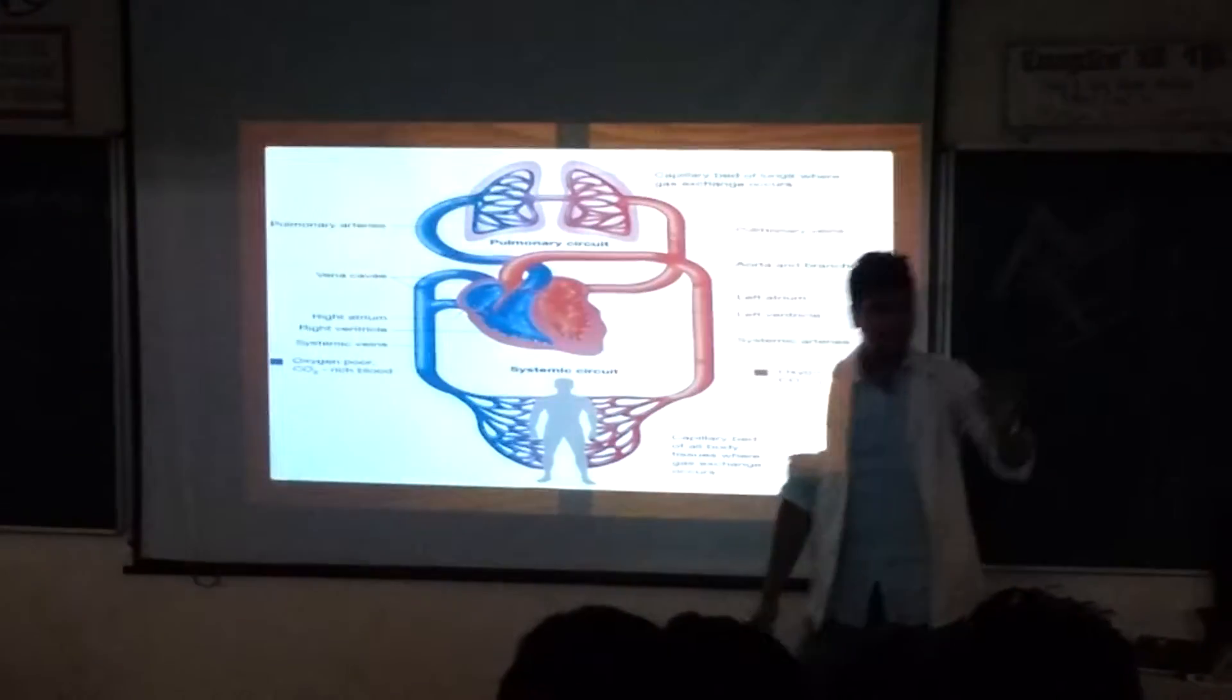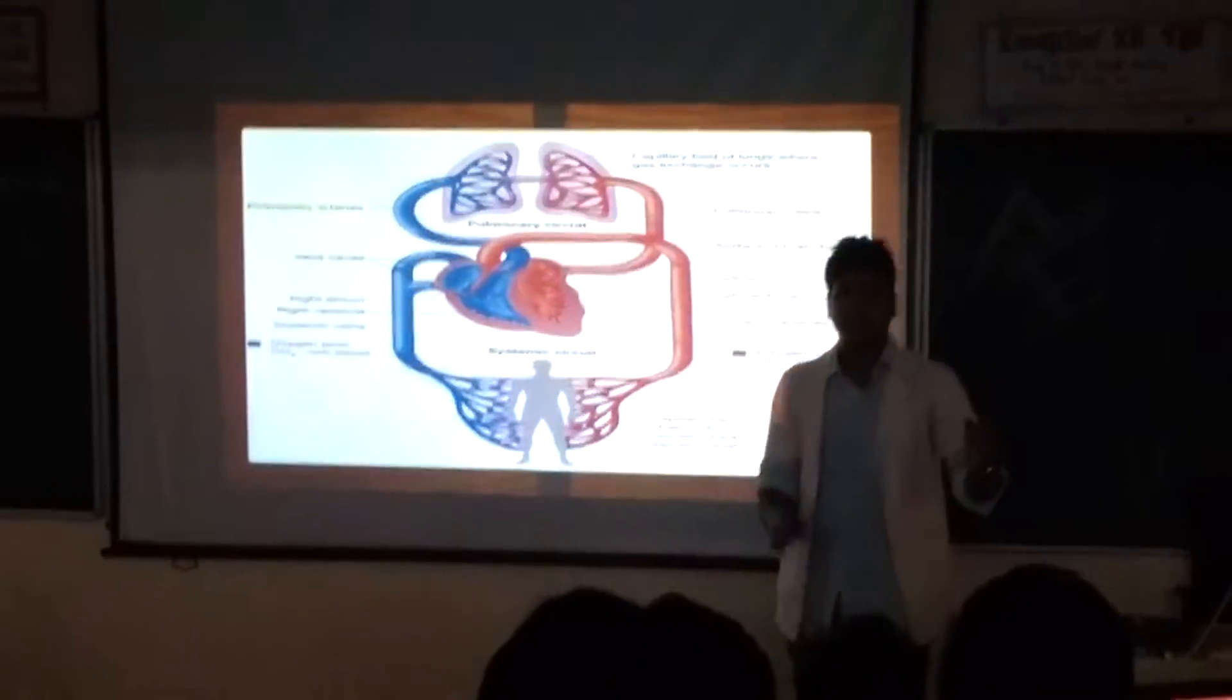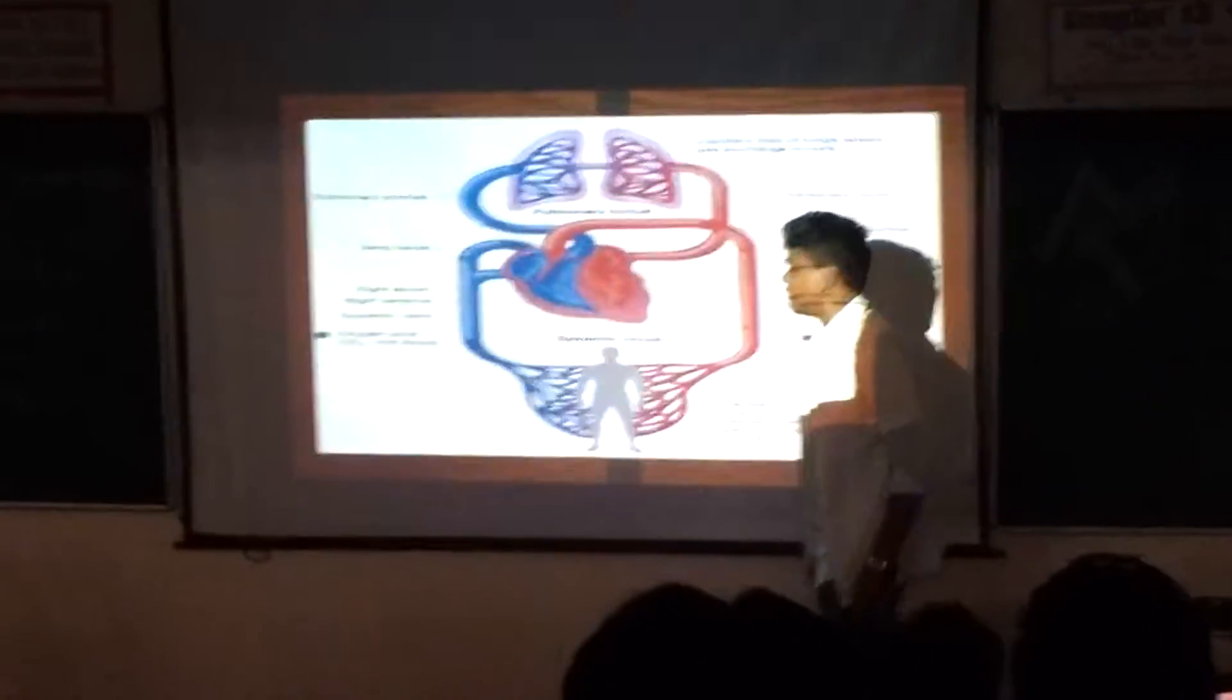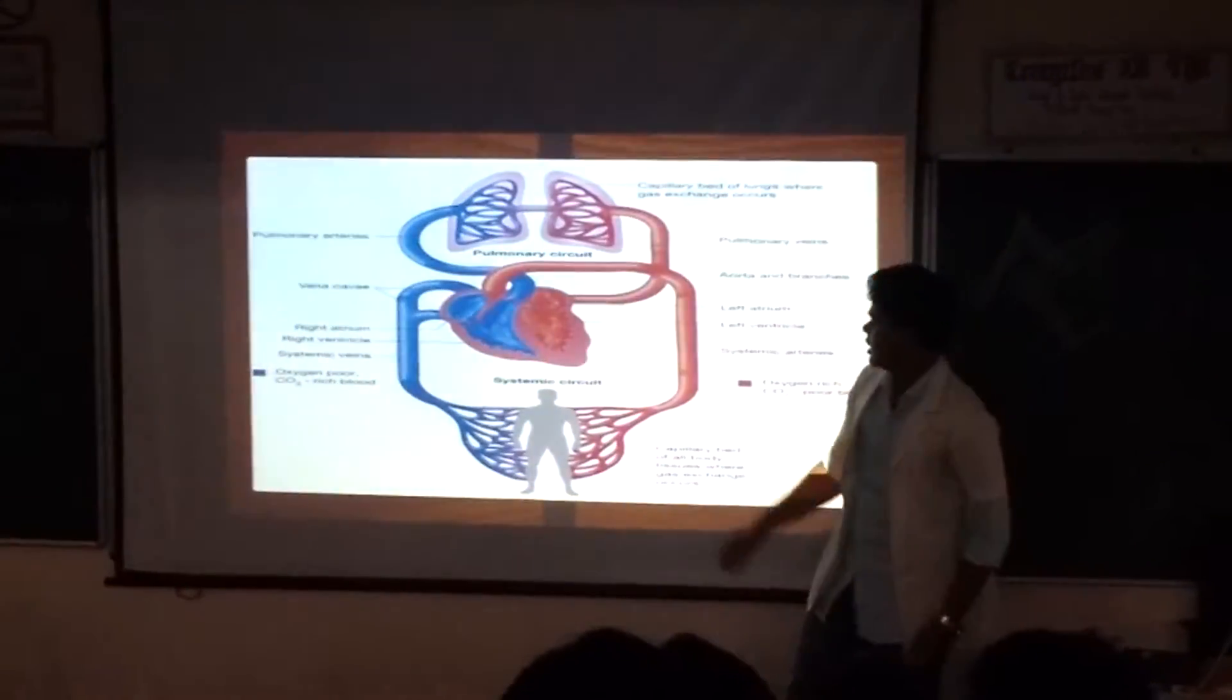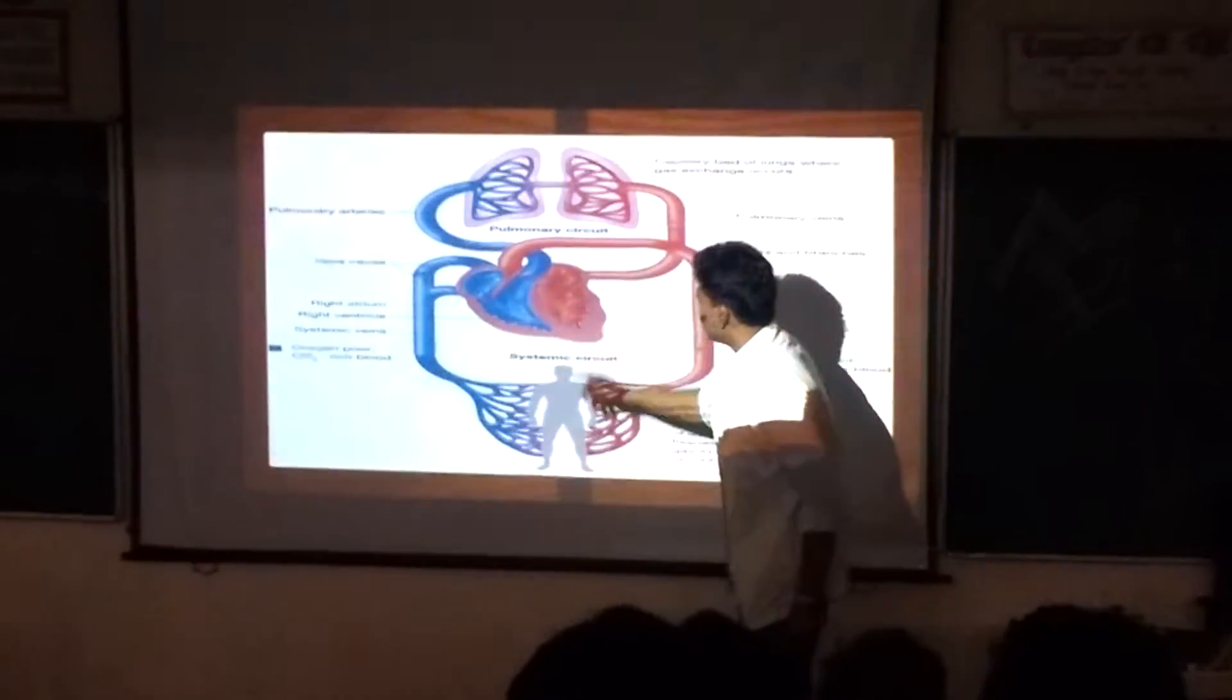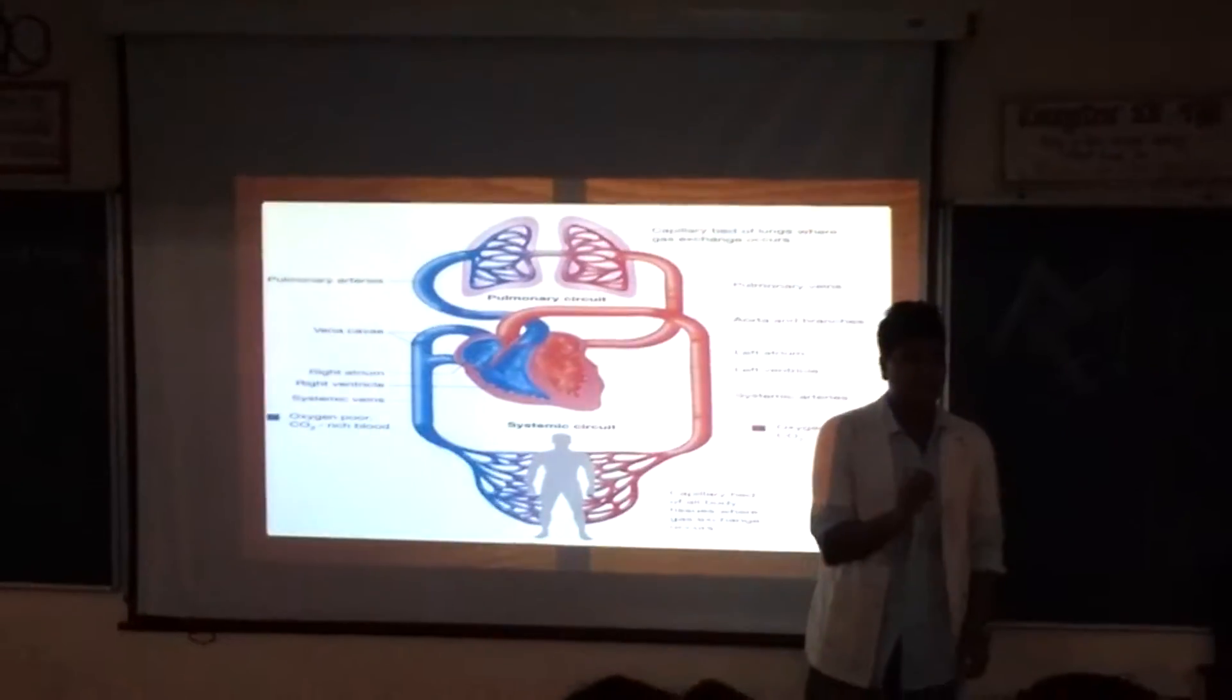In the right atrium, blood comes from the entire body. From the right ventricle, blood is pumped through the pulmonary artery to the lungs.